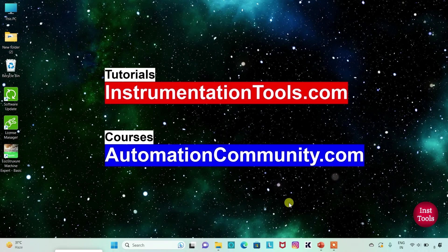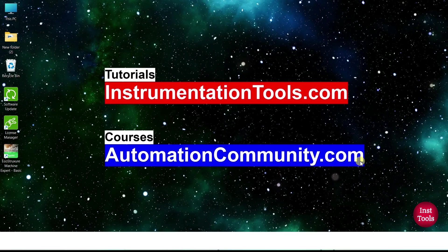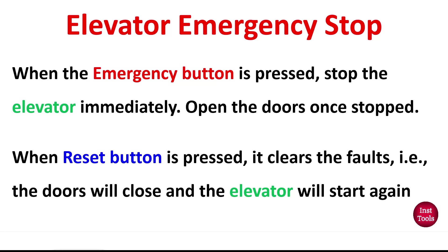Hello friends, welcome to Automation Community. Today in this video we are going to discuss an example on elevator emergency stop. The example: when the emergency button is pressed, stop the elevator immediately and open the doors. When the reset button is pressed, it clears the faults — the doors will close and the elevator will start again.